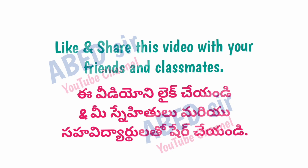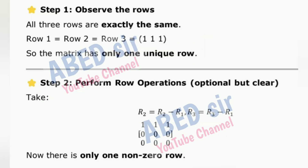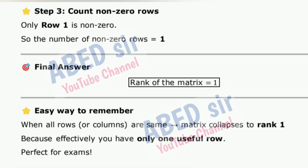Next Important Short Problem 5: Find the rank of matrix A. Step 1: Observe the rows — all 3 rows are exactly the same: Row 1 = Row 2 = Row 3 = (1,1,1). So the matrix has only one unique row. Step 2: Perform row operations — after elimination, there is only one non-zero row. Step 3: Count non-zero rows — only row 1 is non-zero, so the number of non-zero rows = 1. Final answer: Rank of the matrix = 1. Easy way to remember: when all rows or columns are the same, the matrix collapses to rank 1, because effectively you have only one useful row.